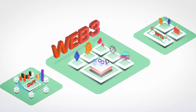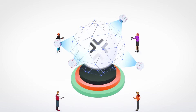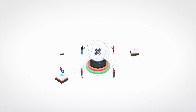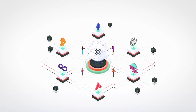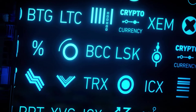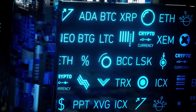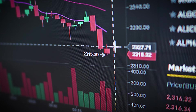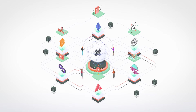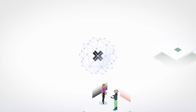Axelar is a decentralized network that aims to deliver secure cross-chain communication for Web3. This means it aims to solve the problem of interoperability, which is the ability of different blockchains to communicate and exchange data and value with each other. Interoperability is a key issue in the blockchain space and is absolutely essential for the growth and adoption of Web3. So the question is, how does Axelar achieve cross-chain communication or blockchain interoperability?